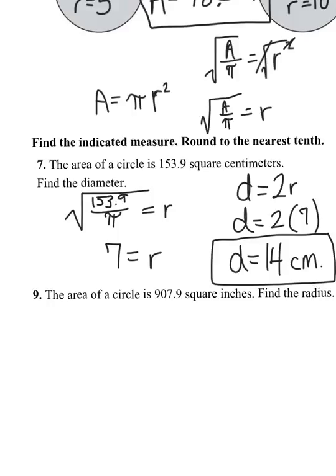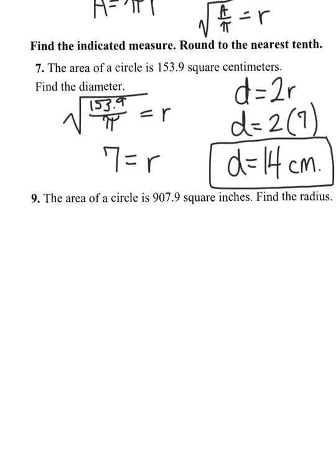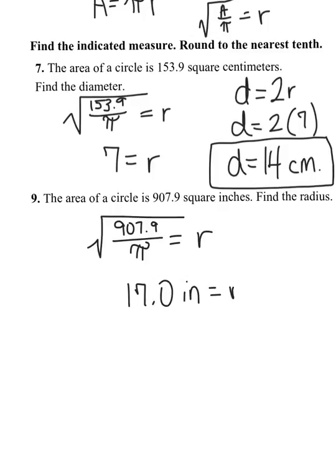We'll go ahead and do question number 9. Question number 9 says find the radius. As we had on the top there, the square root of the area divided by pi equals my radius. When I plug that in and I round, it's 16.99, but because it says tenth place, it's going to be 17.0 inches equals my radius.